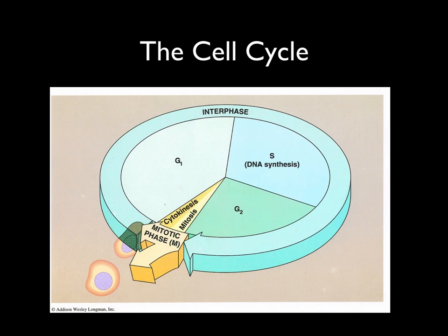Growth phase 1 is the most variable of those phases in terms of length — some cells will move through it fairly quickly, whereas other cells might take their time. For example, epithelial cells, the cells of your skin, are constantly being sloughed off and worn away, so we constantly have to replace them. It makes sense that an epithelial cell would move through growth phase 1 fairly quickly. Other cells, like liver cells, take a much slower route through growth phase 1.